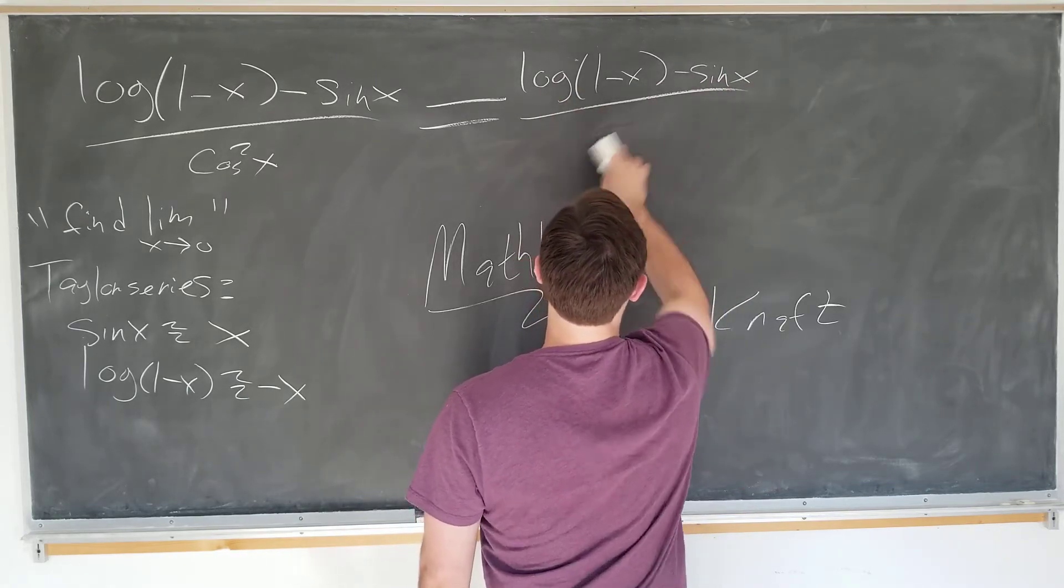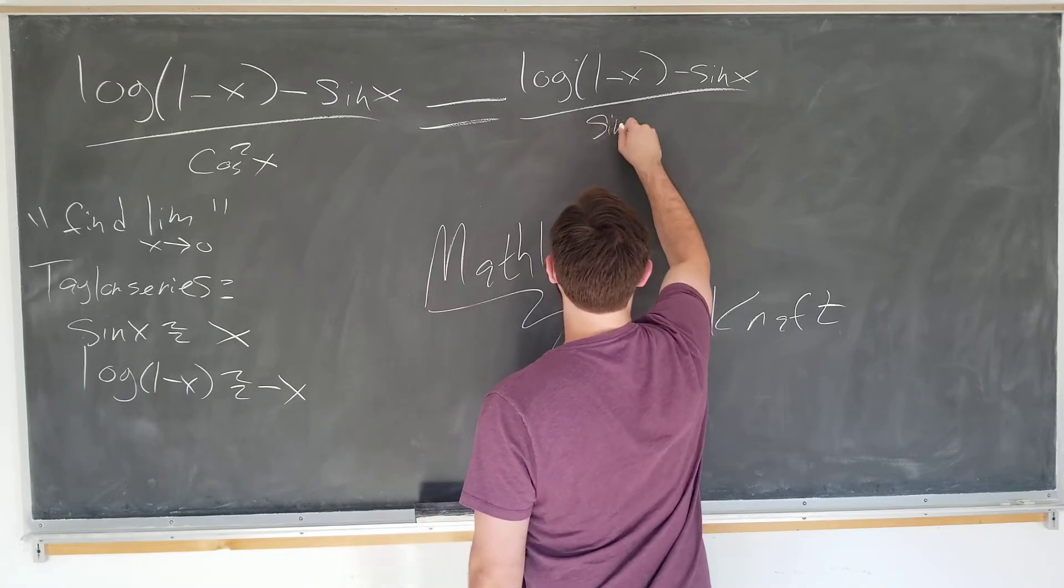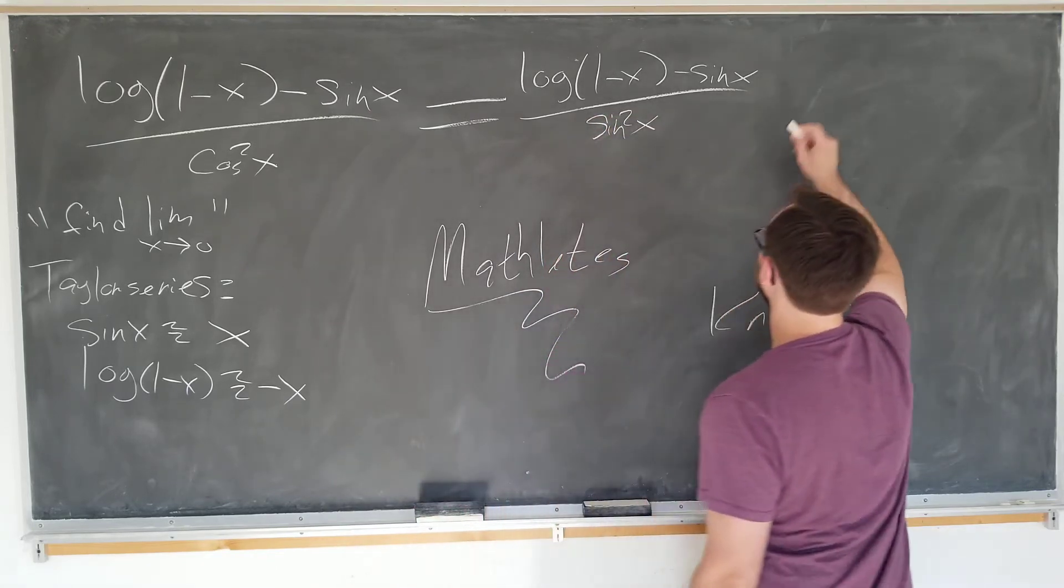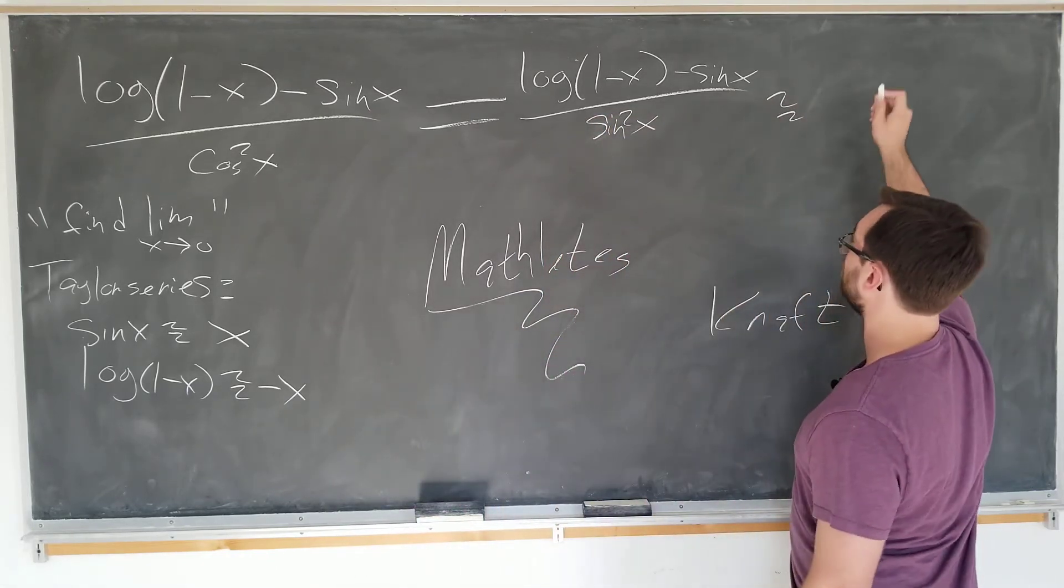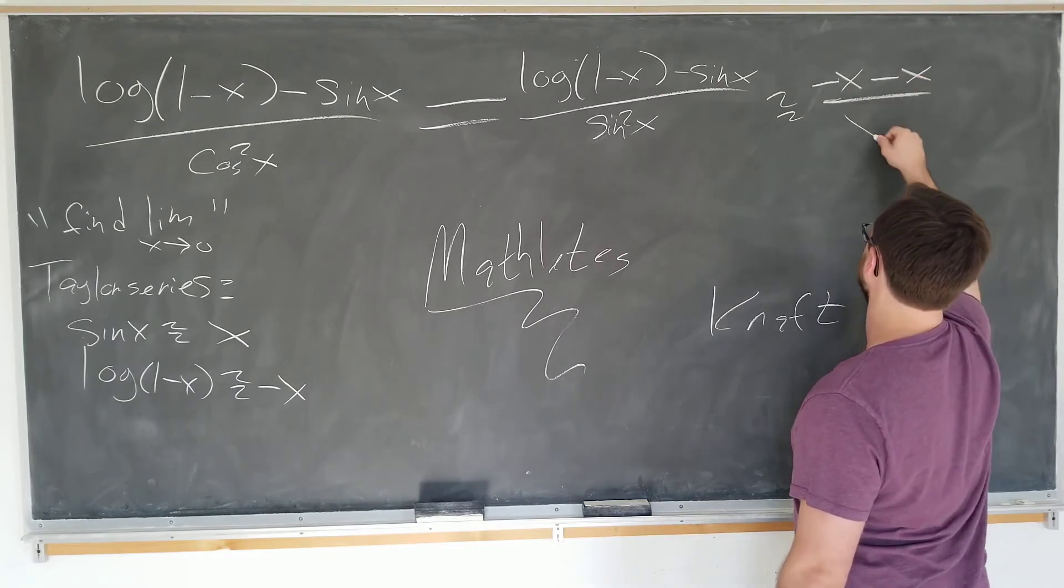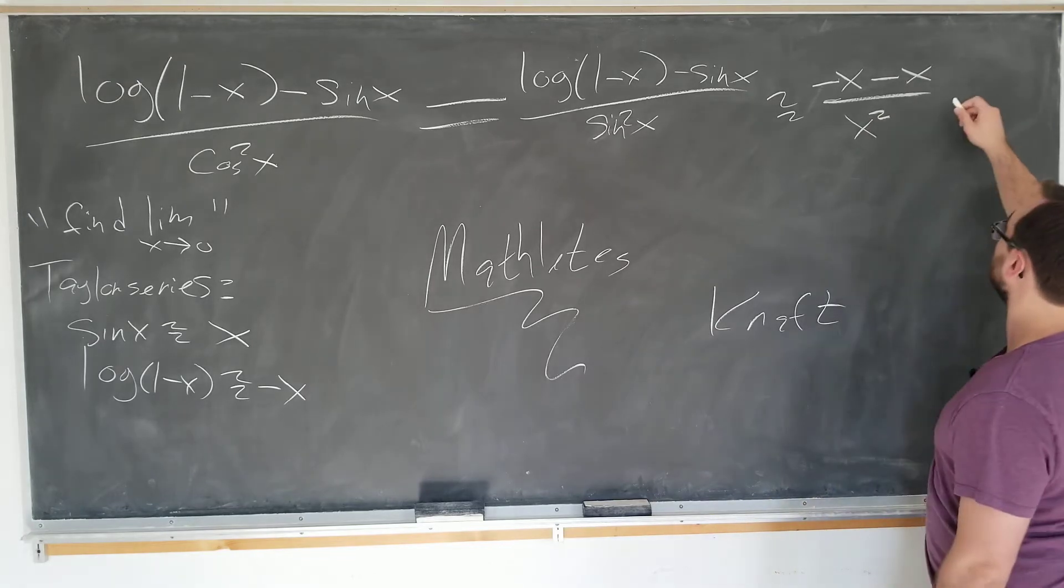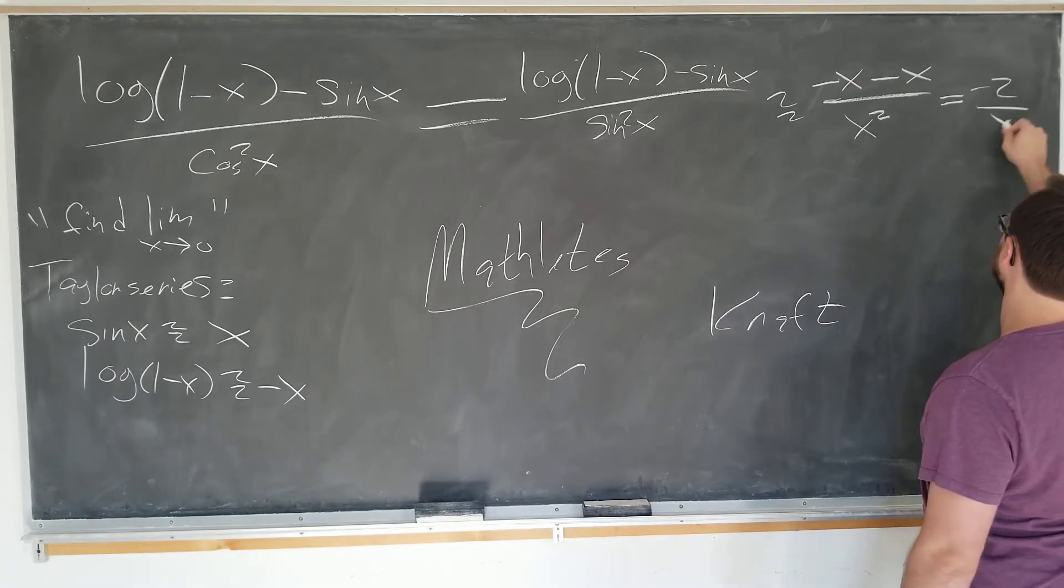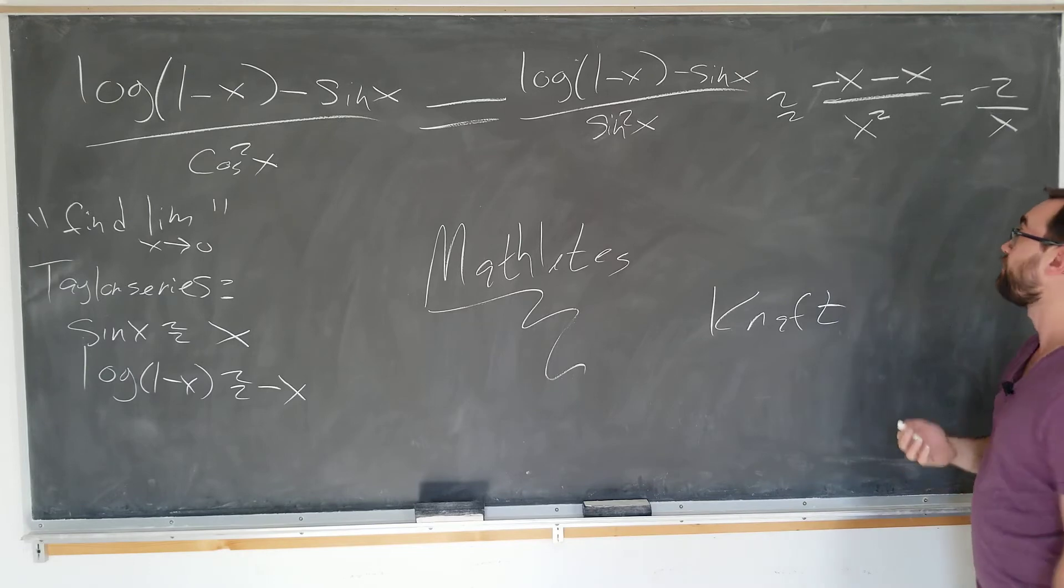...which is minus 2 over X. So we can conclude that the limit as X goes to zero does not exist, since the graph of this function is proportional to the 1 over X graph...